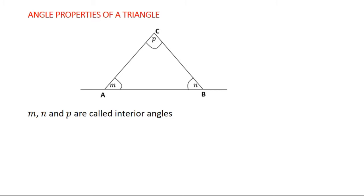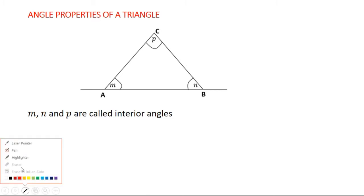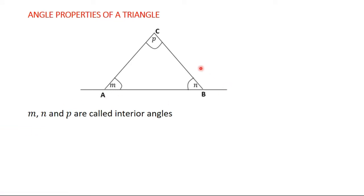You know that a triangle is a three-sided plane figure. So as we have in this diagram, we have triangle A, B, C, then we have the angles M, N, and P. These angles M, N, and P are referred to as interior angles — the angles inside the triangle.